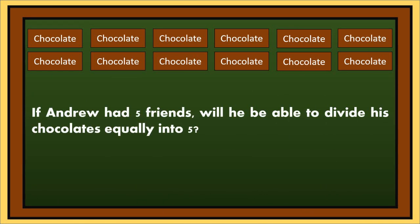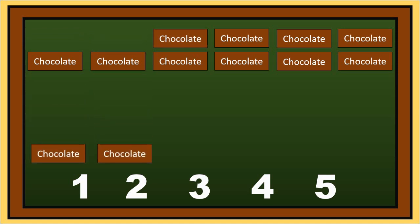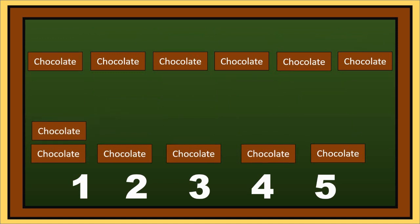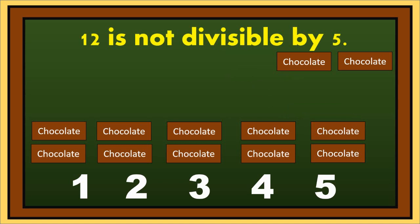Let's go back to the 12 chocolates. If Andrew had 5 friends, will he be able to divide these chocolates into 5 equally? Let's find out. Let's divide 12 by 5. In Tagalog, hatiin natin ang 12 sa 5. As you can see, we can't divide 12 chocolates into 5 because 12 is not divisible by 5. Hindi natin mahahati ang 12 sa 5 dahil mayroong remainder.